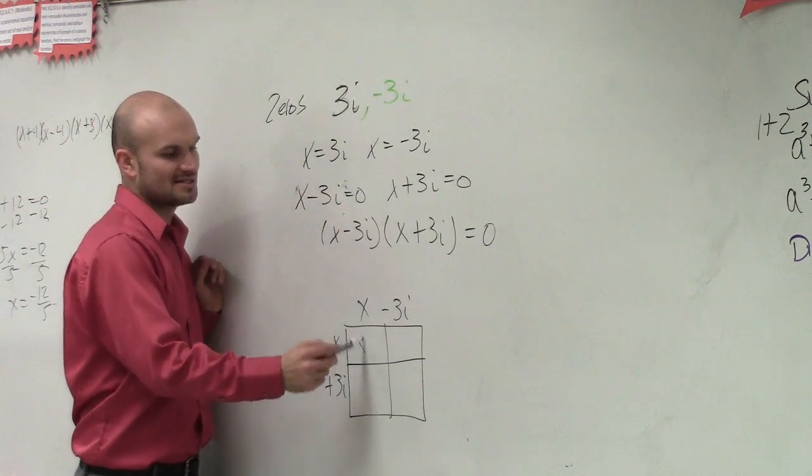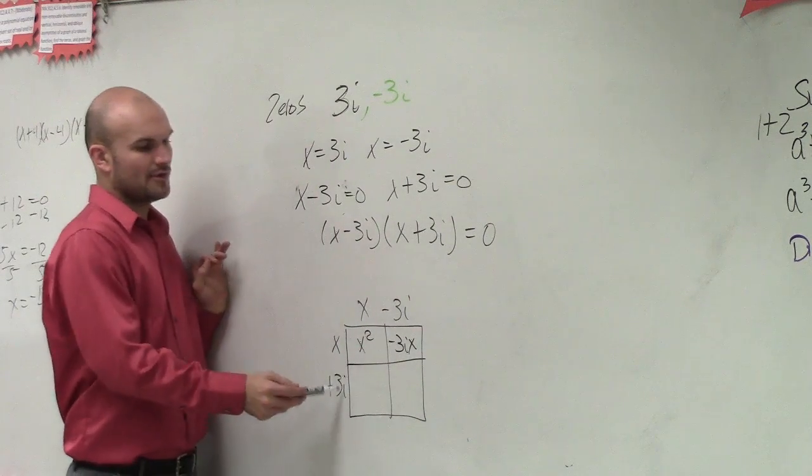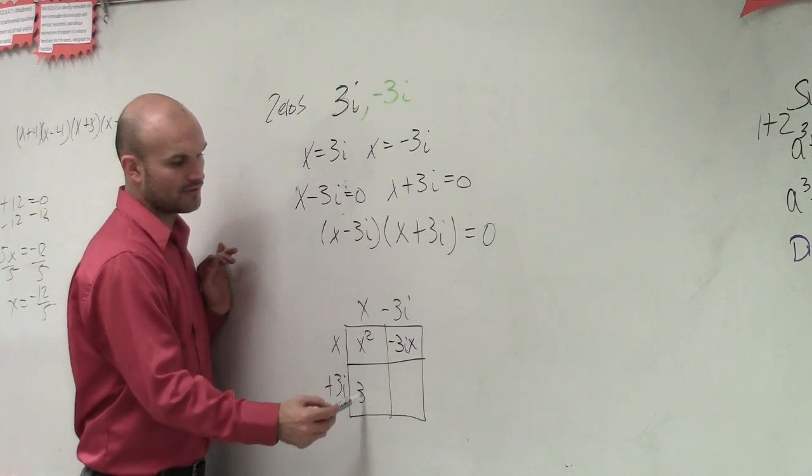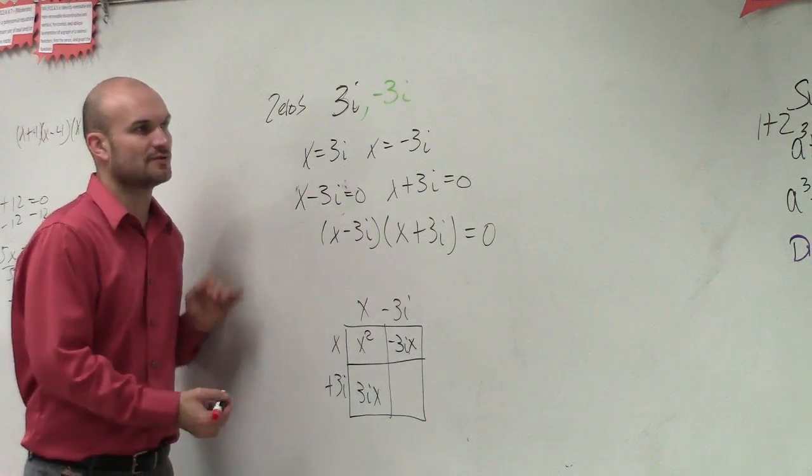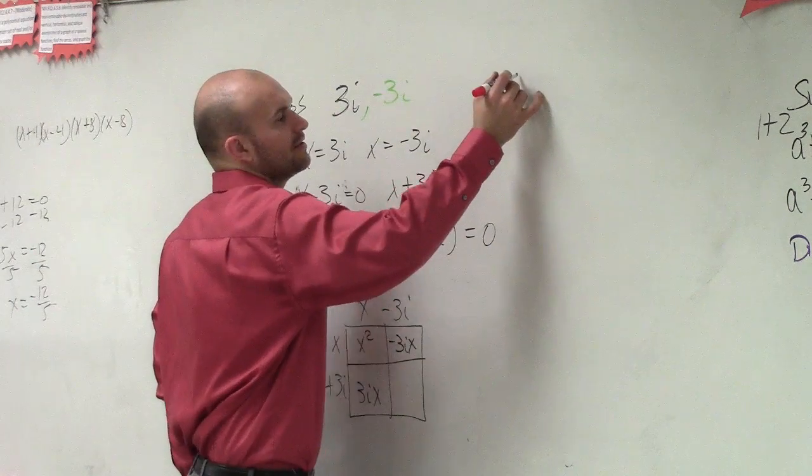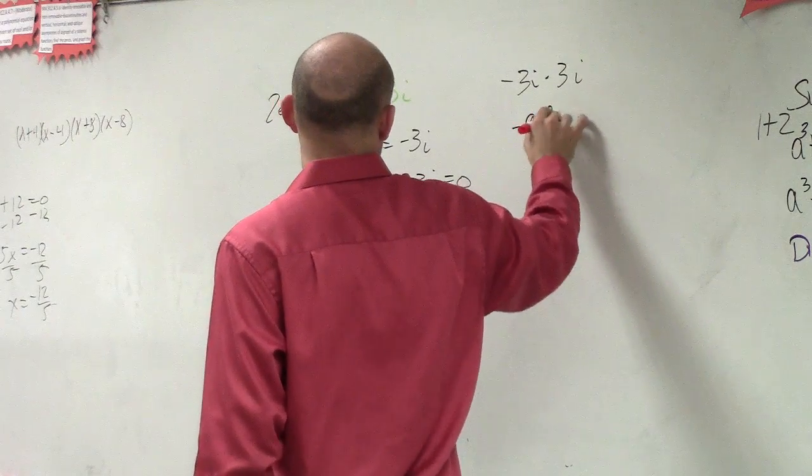So x times x is x squared. x times negative 3i is negative 3ix. 3i times x is 3ix, positive 3ix.